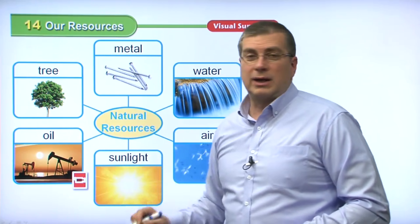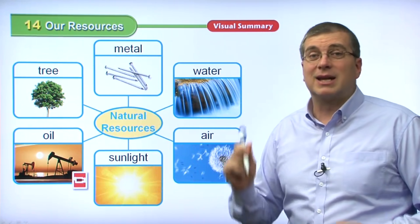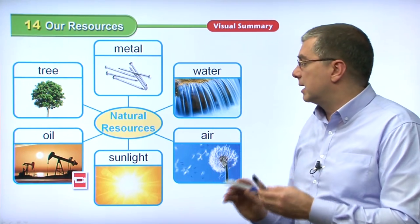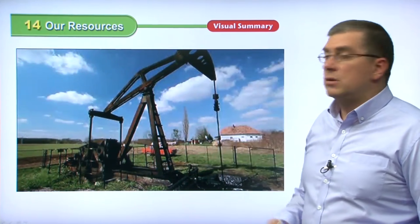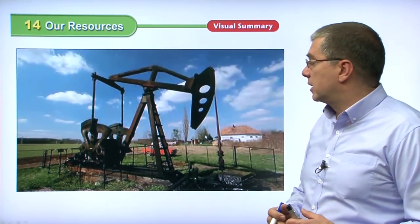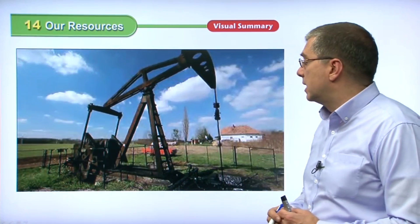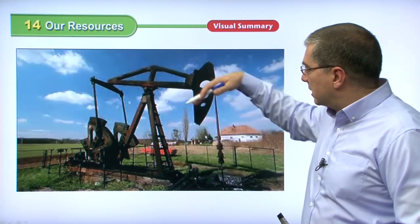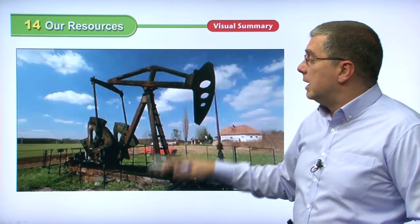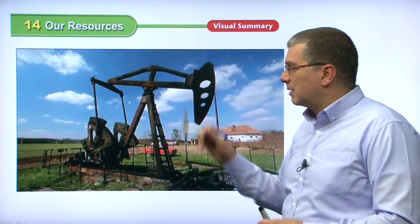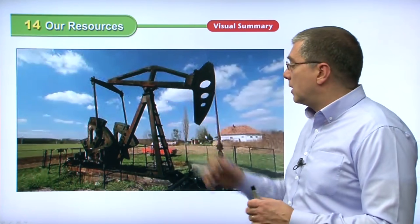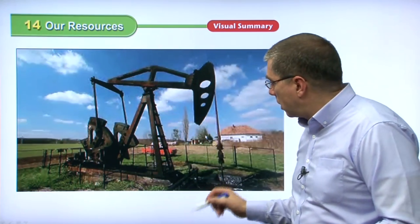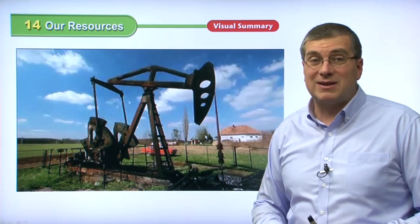Another important resource is oil. We use oil to make plastic, and plastic is so important — even these tools I'm using are made from plastic. Oil is also used to make gasoline, which powers our cars, trains, planes, and many boats. So it's very important for transportation. This is an oil rig — an oil pumping device. It pumps oil automatically 24 hours a day, 7 days a week, until all the oil underground is out. And of course, oil is a very expensive natural resource.